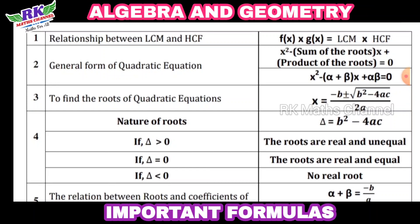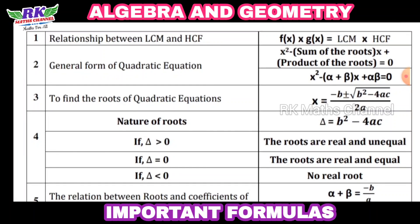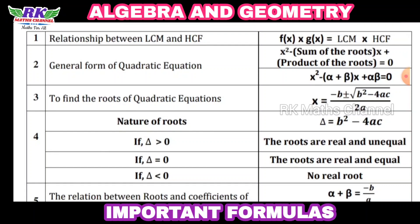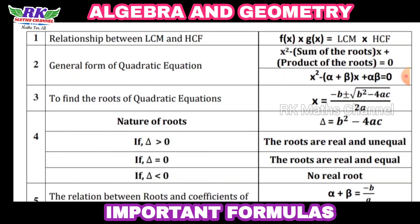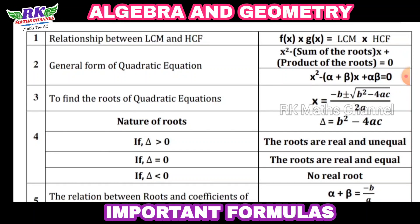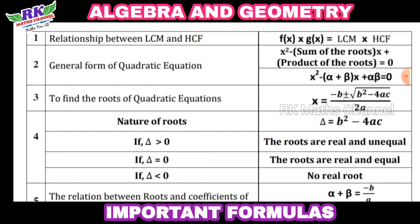The first point is the relation between LCM and HCF. This applies to polynomials. For two polynomials f(x) and g(x), their product f(x) × g(x) is equal to LCM times HCF of f(x) and g(x).